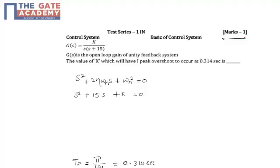The transfer function G(s) is given as k divided by s(s + 15). This G(s) is the open-loop gain of a unity feedback system. We have to find the value of k such that the peak overshoot occurs at 0.314 seconds.